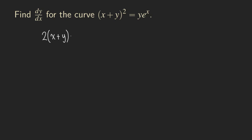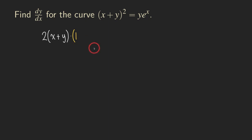The derivative of x is just one. One thing to remember is that because we have multiple terms as an inner function, when we take the derivative of the inner function, we actually need to put parentheses here — we cannot simply put a dot and stop. We need to put open parentheses to surround the derivative of the inner function. So we get the one here and plus...